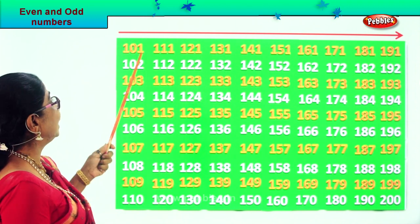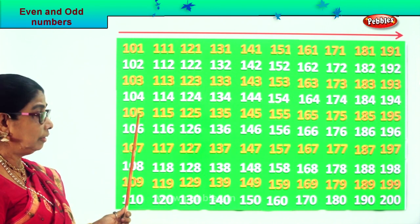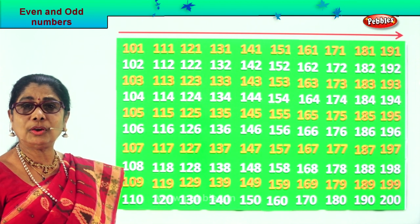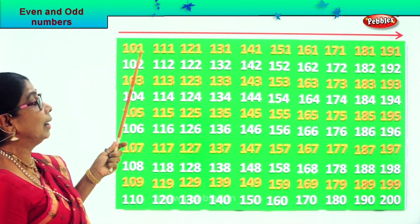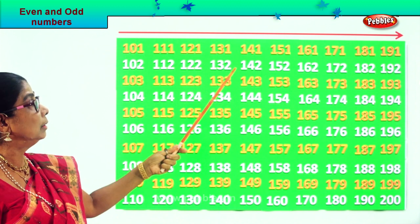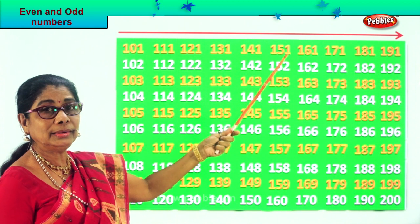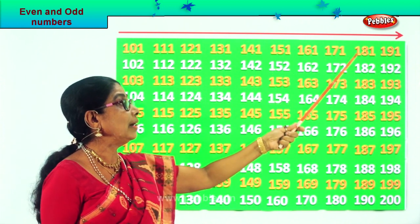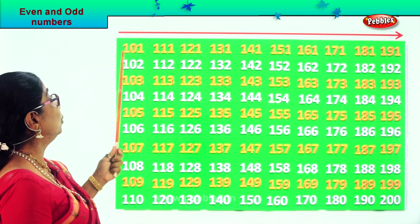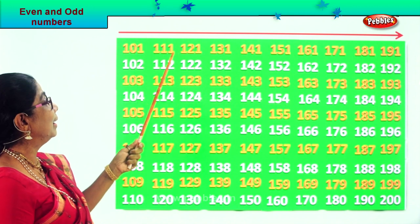All numbers ending in one, three, five, seven and nine. All the numbers ending in one: eleven, twenty-one, thirty-one, forty-one, fifty-one, sixty-one, seventy-one, eighty-one, ninety-one. Now here we are doing hundreds. So all numbers ending in one: one hundred and one, one hundred and eleven.